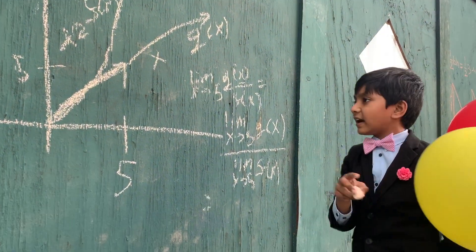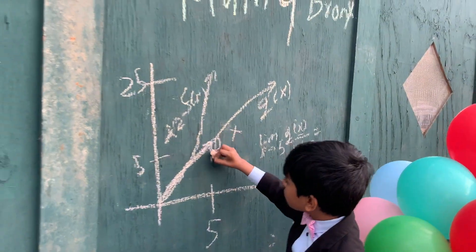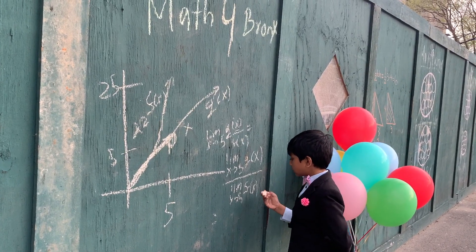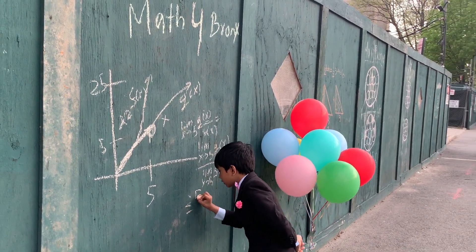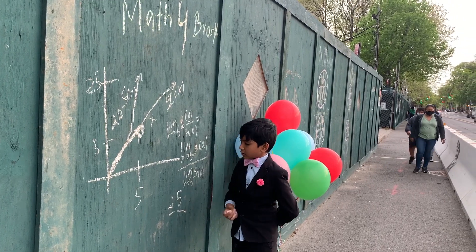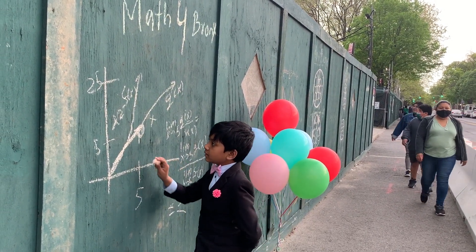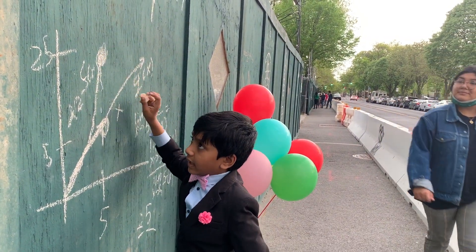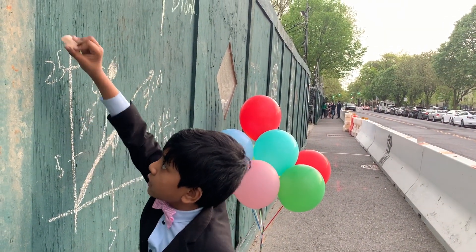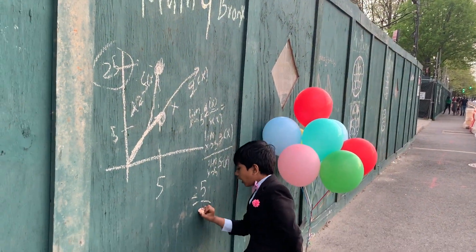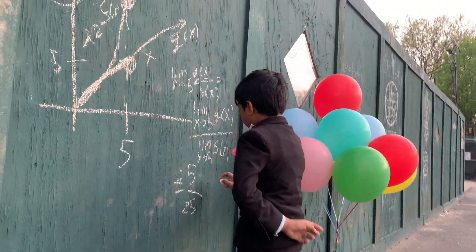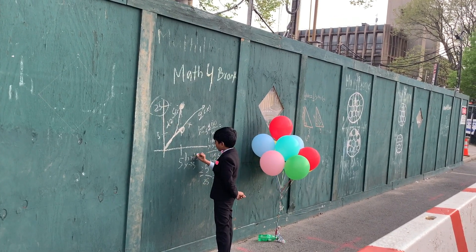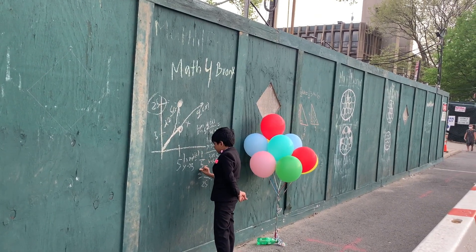We know what the limit as x approaches 5 of g(x) is going to be. If we trace to the y-axis, we get 5. But then what about f(x), which is x squared? Let's look upward and see what y it's at — it seems to be at 25. So the denominator is 25, giving us a total result of 1/5.